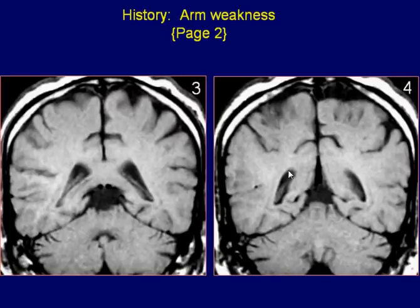Coronal T1-weighted images show the right temporal lesion as a subtle low-signal intensity area.